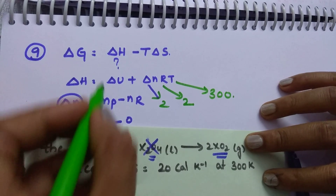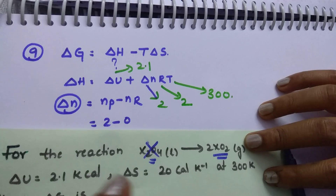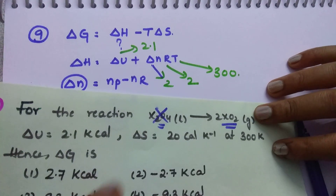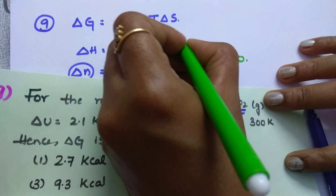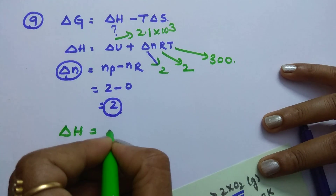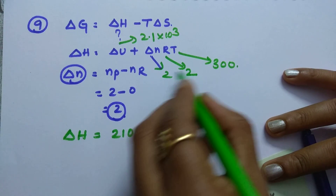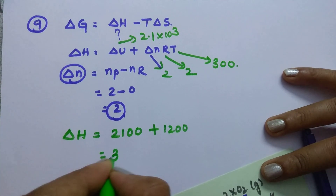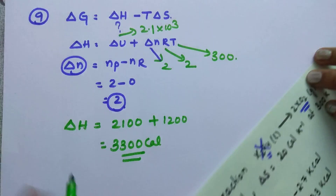Delta U is given as 2.1 kilocalories — be careful, it is given in kilocalories, so convert to calories: 2100 calories. Then delta H = 2100 + 2 × 2 × 300 = 2100 + 1200 = 3300 calories. Now substitute into delta G: delta G = 3300 − (300 × 20) = 3300 − 6000 = −2700 calories. Converting: −2700 ÷ 1000 = −2.7 kilocalories. So delta G equals minus 2.7 kilocalorie.